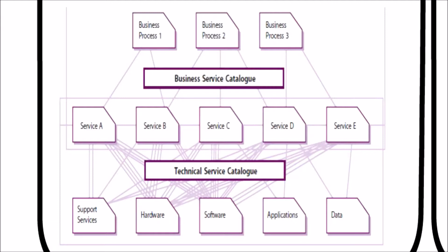The Technical Service Catalogue contains the details of all of the IT services delivered to the customer, together with relationships to the supporting services, shared services, components and CIs necessary to support the provision of the service to the business. Here is an example for your reference. You can see that business process units use the Business Service Catalogue, and the technical unit uses the Technical Service Catalogue. Though the service offered is a single one, two catalogues are used.